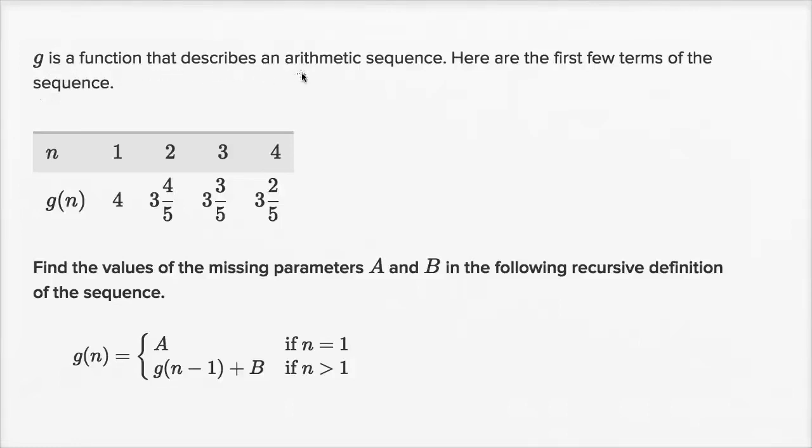G is a function that describes an arithmetic sequence. Here are the first few terms of the sequence. The first term is 4, second term is 3 and 4/5, third term is 3 and 3/5, fourth term is 3 and 2/5.